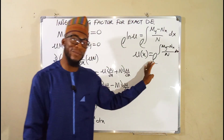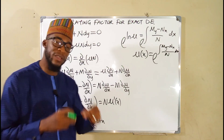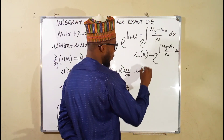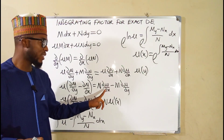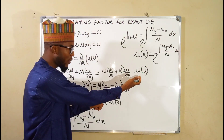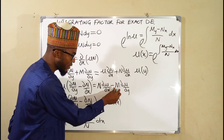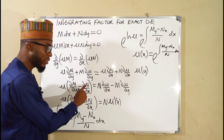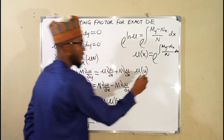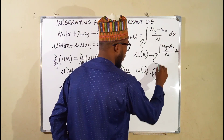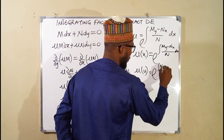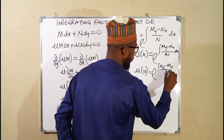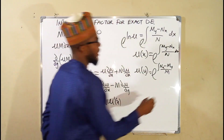Now, what if we are looking for the integrating factor with respect to y, which is mu of y? From the earlier equation, we set the derivative with respect to x equal to 0 since mu depends only on y. Dividing through by negative M, we get: mu(y) = e to the integral of (N subscript x minus M subscript y) over M, dy.